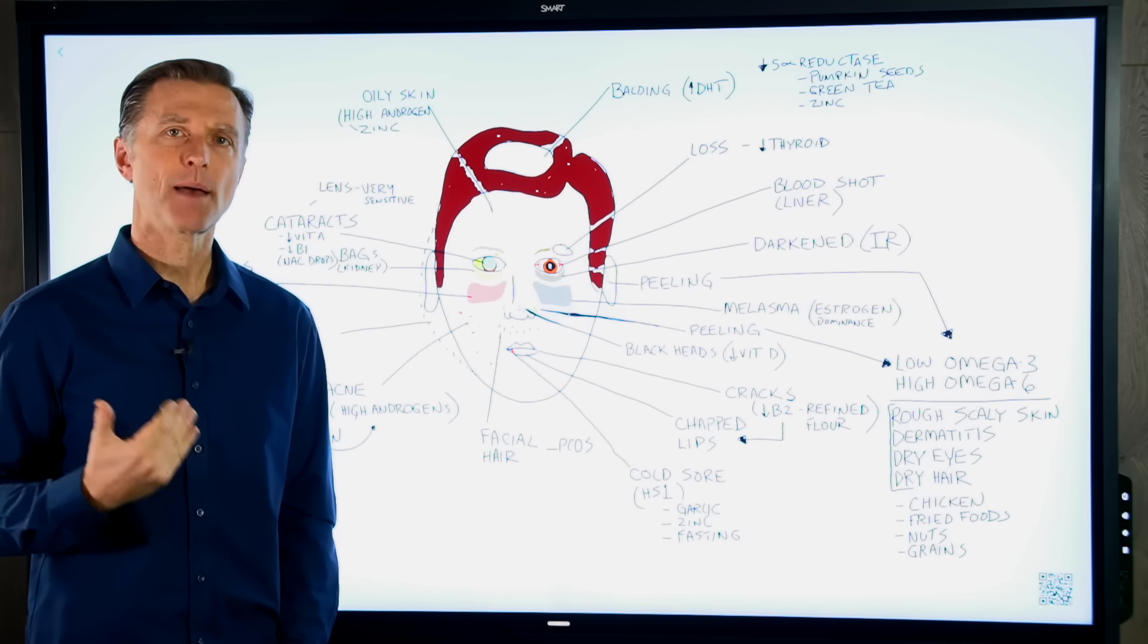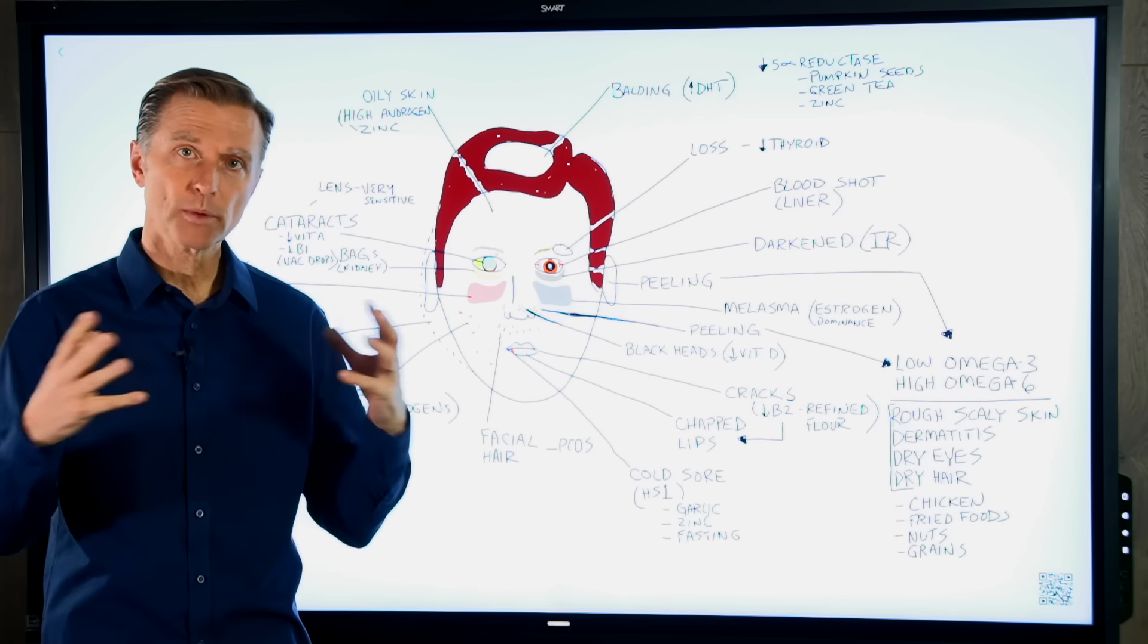But the treatment for red cheeks medically is giving a person an antibiotic. Now, why would an antibiotic work for red cheeks? Well, obviously, there's some type of microbial imbalance going on. Why not give the person a natural antibiotic? Like garlic, oregano, thyme, wormwood extract, sage. There's a lot of different herbs you can take as a natural antibiotic.